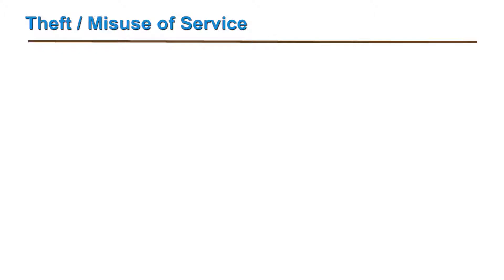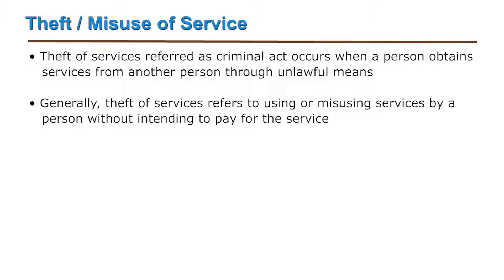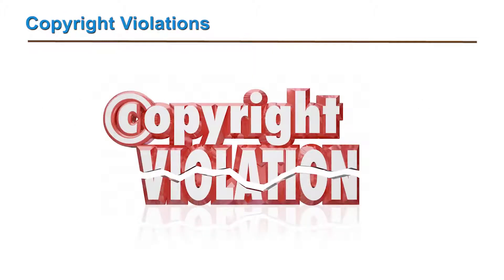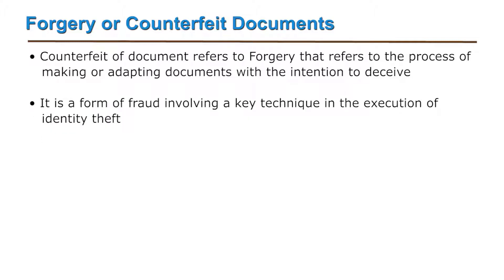Next comes theft or misuse of service. Theft of services refers to a criminal act that occurs when a person obtains services from another person through unlawful means — generally, using or misusing services without intending to pay. Next comes copyright violations. Then forgery or counterfeit documents: the counterfeiting of documents refers to forgery, the process of making or adapting documents with the intention to deceive. It is a form of fraud involving a key technique in the execution of identity theft.